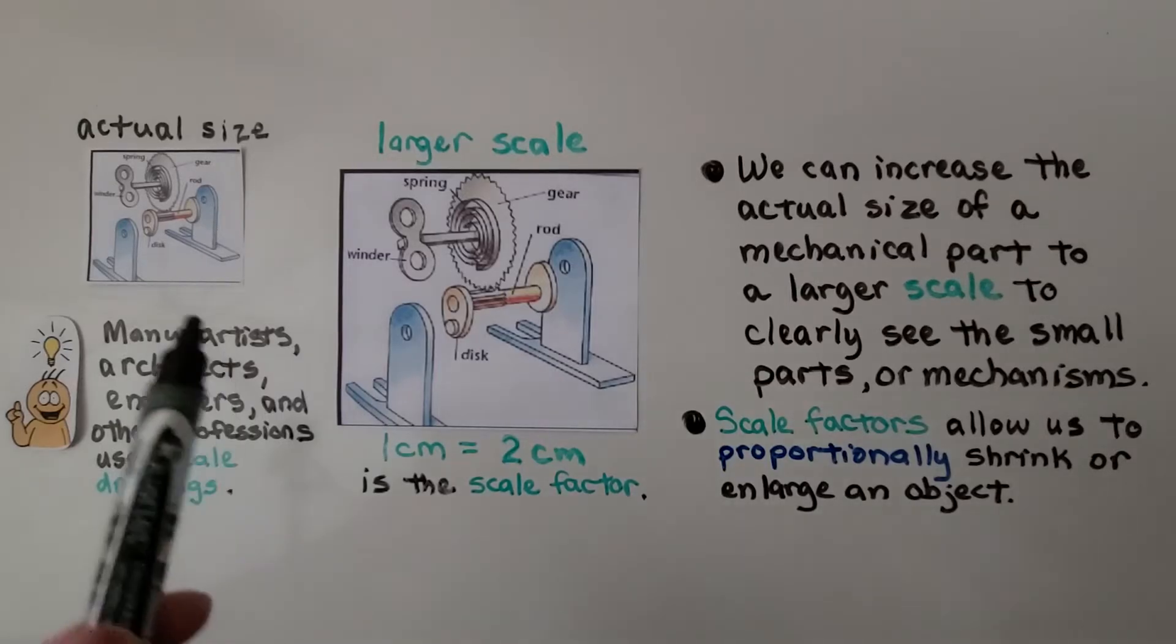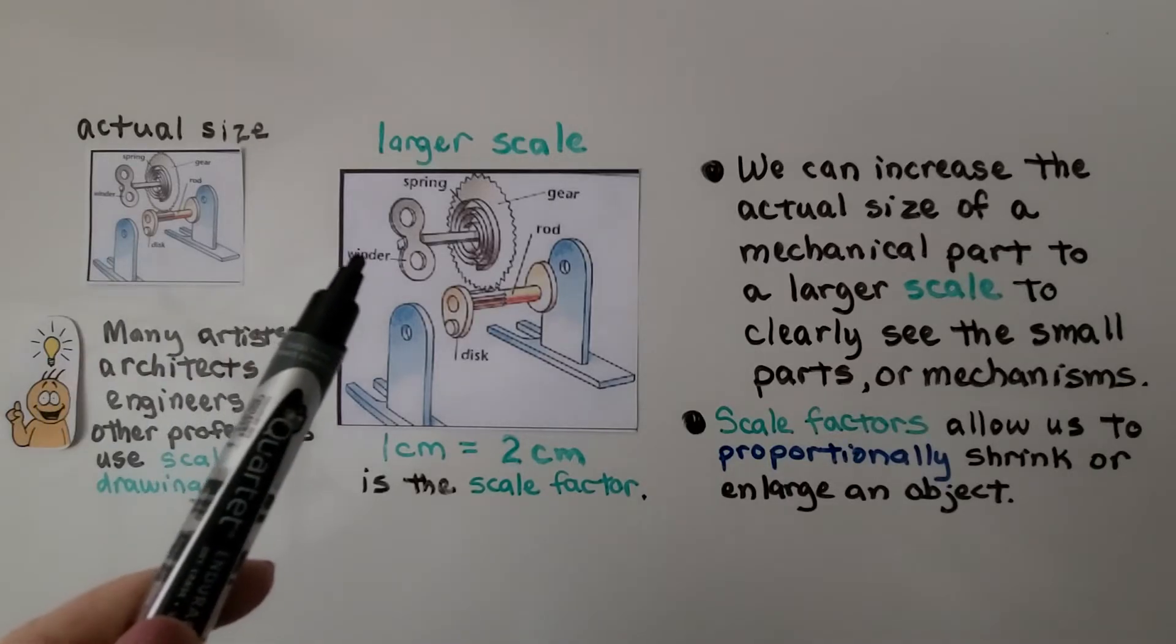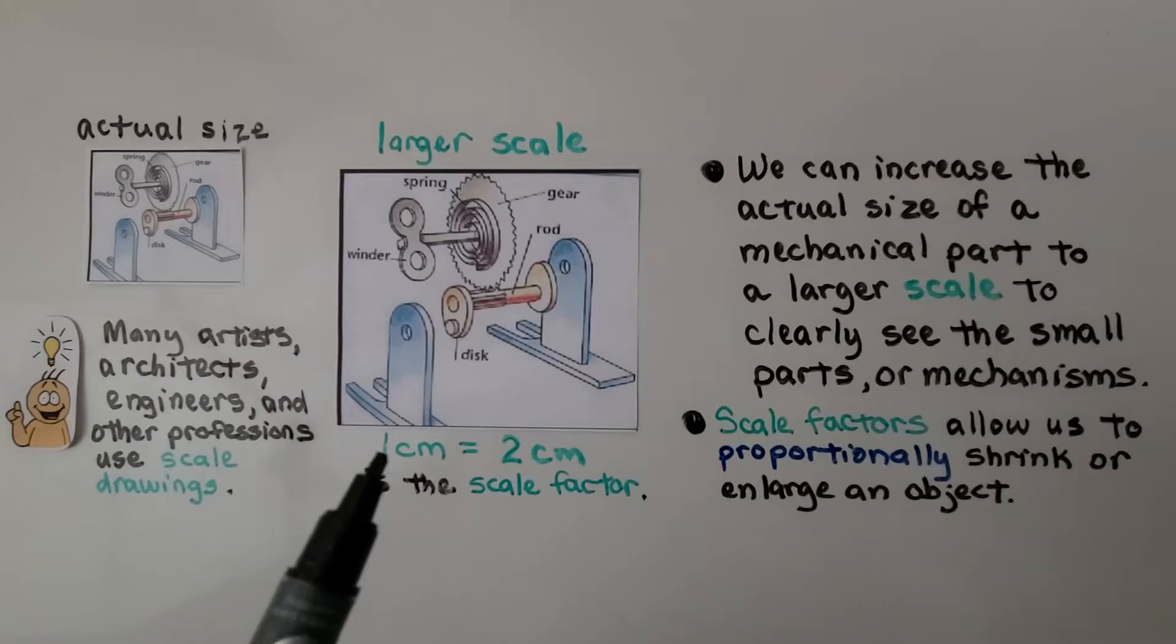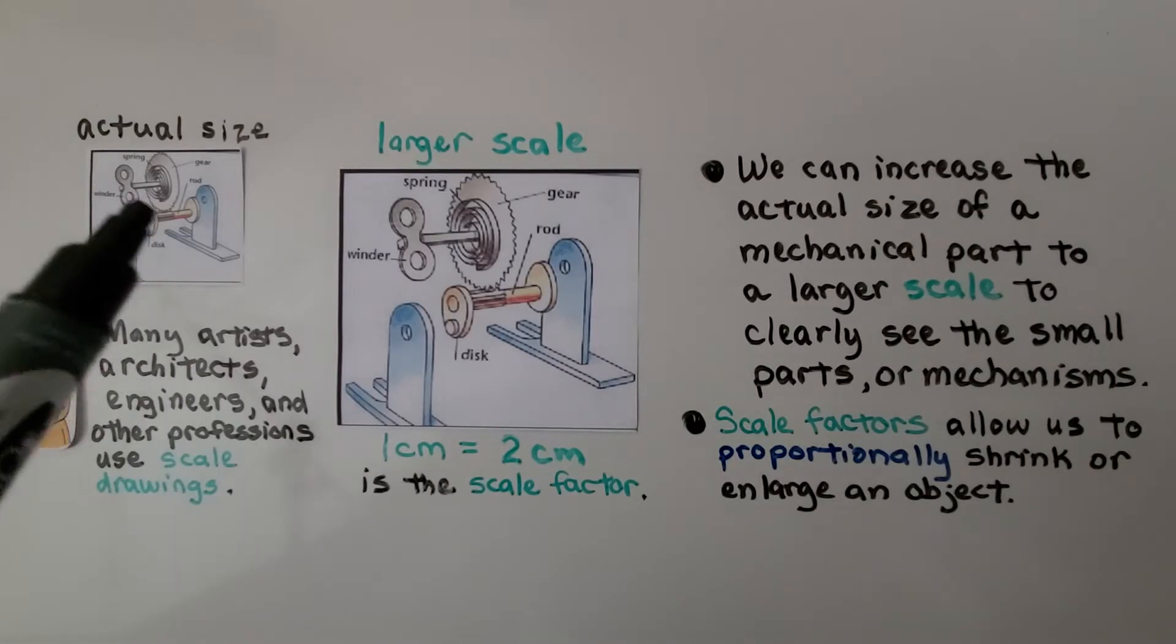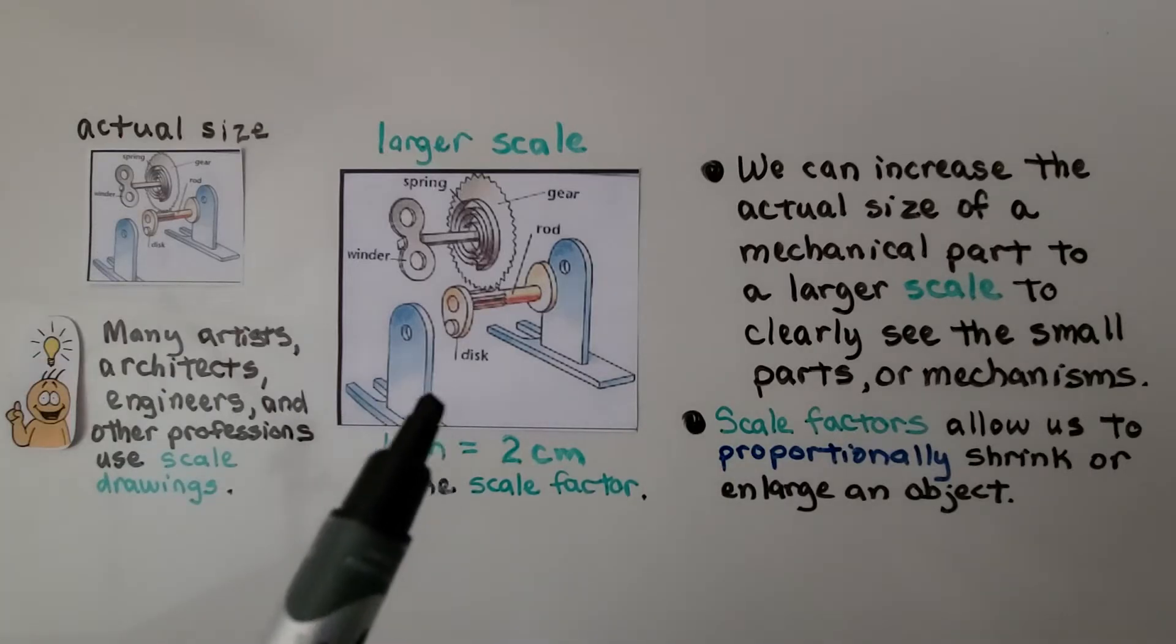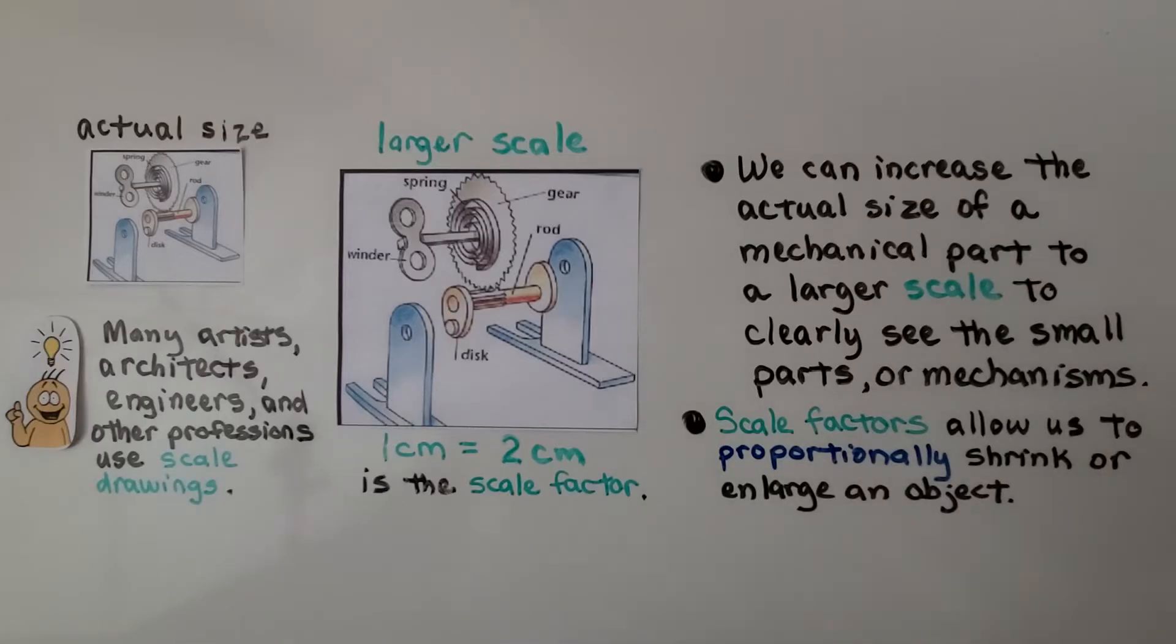So here we have a wind-up mechanism, this is the actual size, and here's a larger scale. The scale factor is 1 cm is equal to 2 cm. So what is 1 cm here is 2 cm here, so we see like a blown-up version, a larger scale of this wind-up mechanism. We can increase the actual size of a mechanical part to a larger scale to clearly see the small parts or mechanisms. And scale factors allow us to proportionally shrink or enlarge an object.